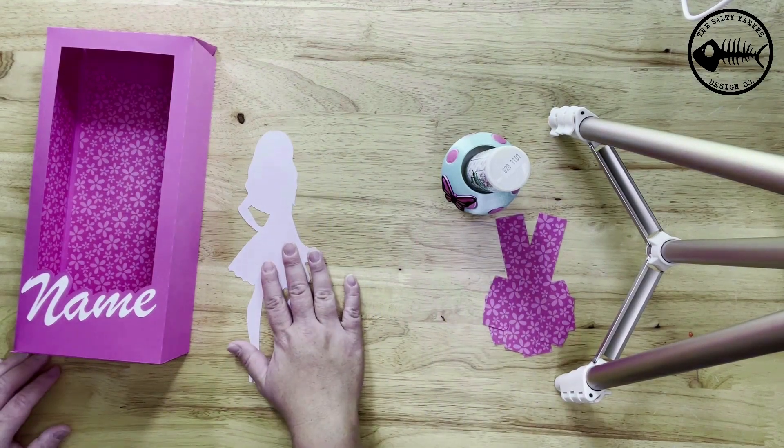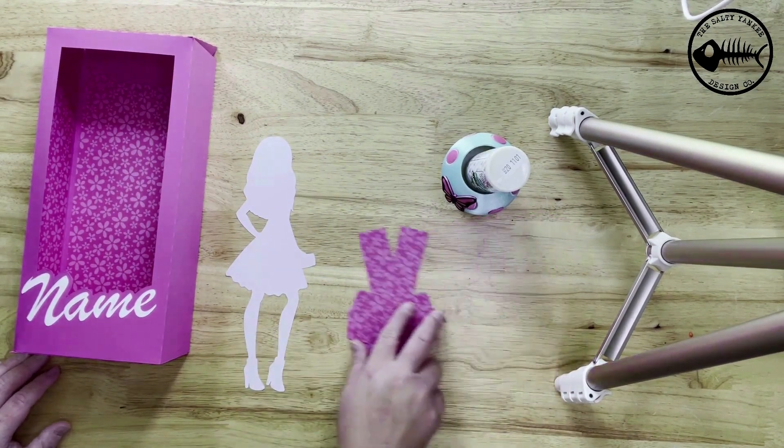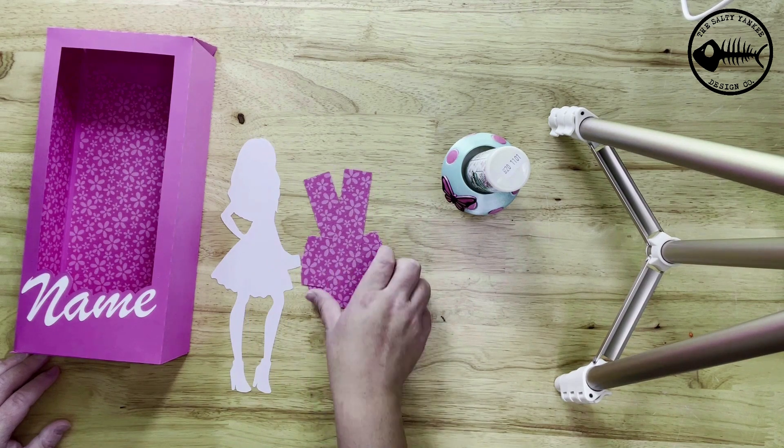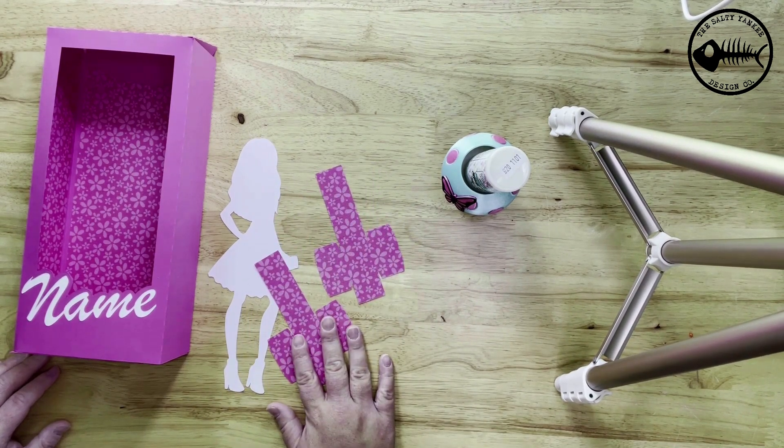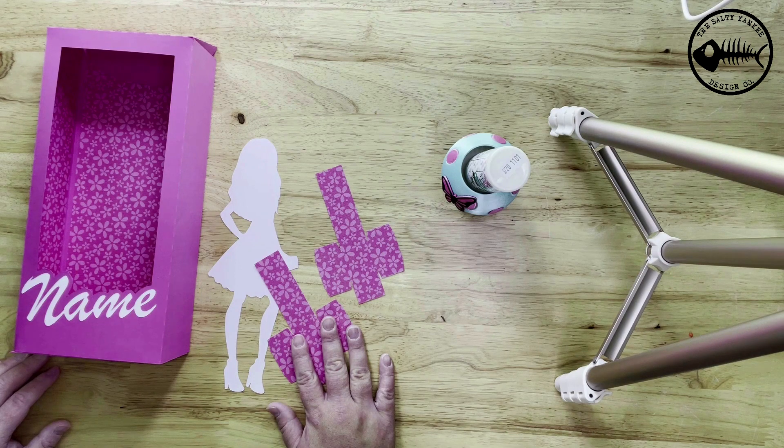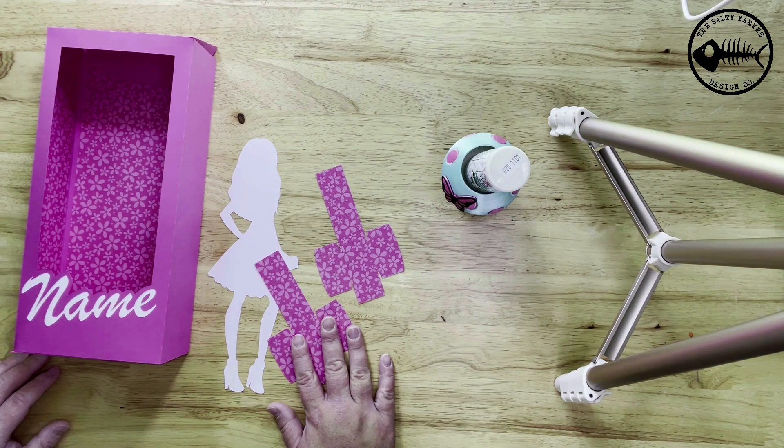So now's the more fun part. We're going to do the Barbie. So your file is going to include a Barbie that you can change the colors on and that you can print then cut. I'm just doing the silhouette right now for simplicity.